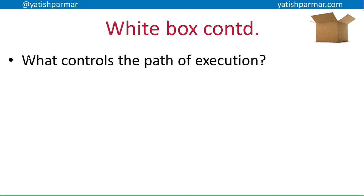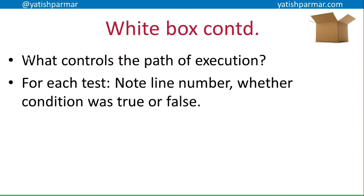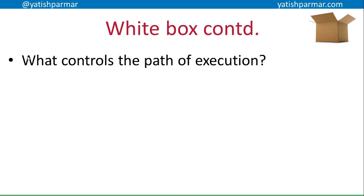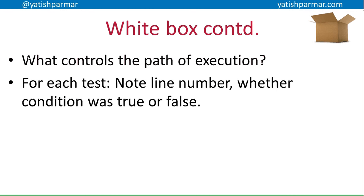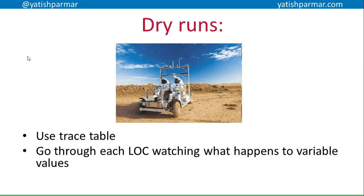When you know that, the person doing the white box testing will be able to isolate and test the most important functions of the system and prove that those most important functions perform as required. When you do white box tests, in part of your documentation you need to know the line numbers, you need to know whether the conditions are true or false and the values of different variables. One way of doing this is you could do dry runs - you use a trace table and go through each line of code and watch what happens with different variable values.